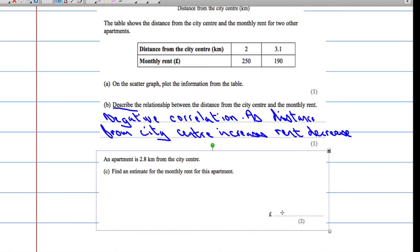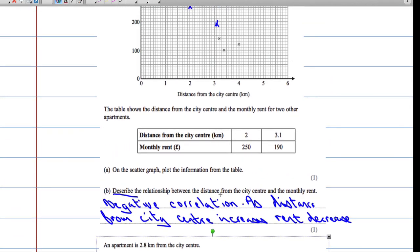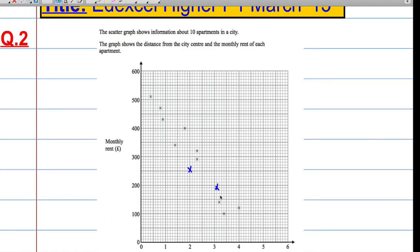We've got an apartment that is 2.8 kilometers from the city center and we're asked to find an estimate. When we see the word estimate and we're dealing with scatter diagrams, we should be thinking of a line of best fit.